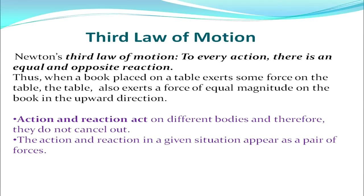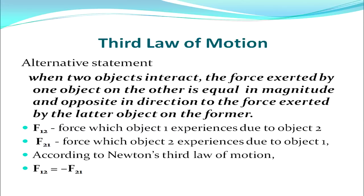Action and reaction act on different bodies and therefore they do not cancel out. Alternatively, we can state the third law as: when two objects interact, the force exerted by one object on the other is equal in magnitude and opposite in direction to the force exerted by the latter on the former. If F₁₂ is the force which object 1 experiences due to object 2, and F₂₁ is the force which object 2 experiences due to object 1, then according to Newton's third law: F₁₂ = −F₂₁.